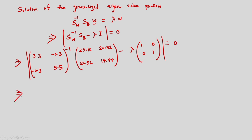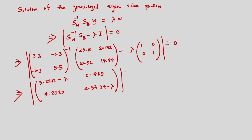After computation, I am getting: [[9.2213 minus lambda, 4.2339], [6.489, 2.9794 minus lambda]] = 0. After solving this, we get lambda squared minus 12.2007 lambda = 0, which means lambda(lambda minus 12.2007) = 0.